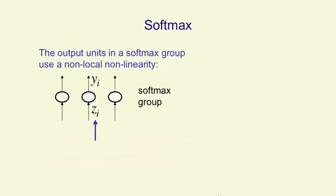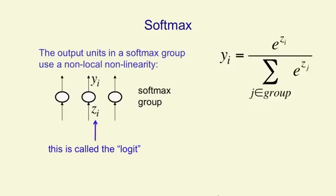It's a kind of soft continuous version of the maximum function. So the way the units in a softmax group work is that they each receive some total input that they've accumulated from the layer below. That's zi for the ith unit, and that's called the logit. And then they give an output yi that doesn't just depend on their own zi. It depends on the z's accumulated by their rivals as well. So we say that the output of the ith neuron is e to the zi divided by the sum over that same quantity for all the different neurons in the softmax group.